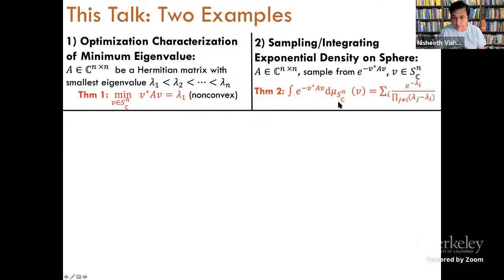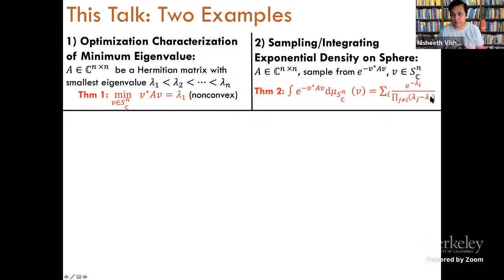This integral over a continuous object ends up having a surprisingly simple exact formula written in terms of eigenvalues, because everything is invariant under unitary transformations. This is not at all obvious — unlike the minimum eigenvalue result which most of the audience would know, this one is more mysterious. We're going to see proofs of both of these theorems in this talk.